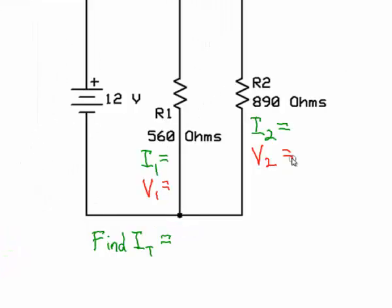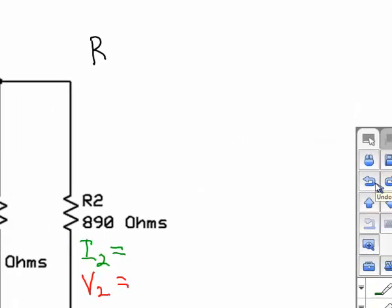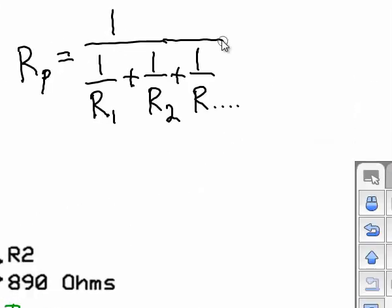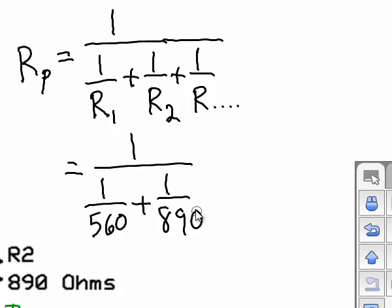We first need to find the total resistance in the circuit. Now this is going to be different than working in a series circuit, and the formula for total resistance in parallel circuits is 1 over 1 over R1 plus 1 over R2 plus 1 over however many resistors you have. So for our example this is going to be 1 over 1 over 560 plus 1 over 890, which turns out to be 343.7 or we'll round it to 344 ohms.